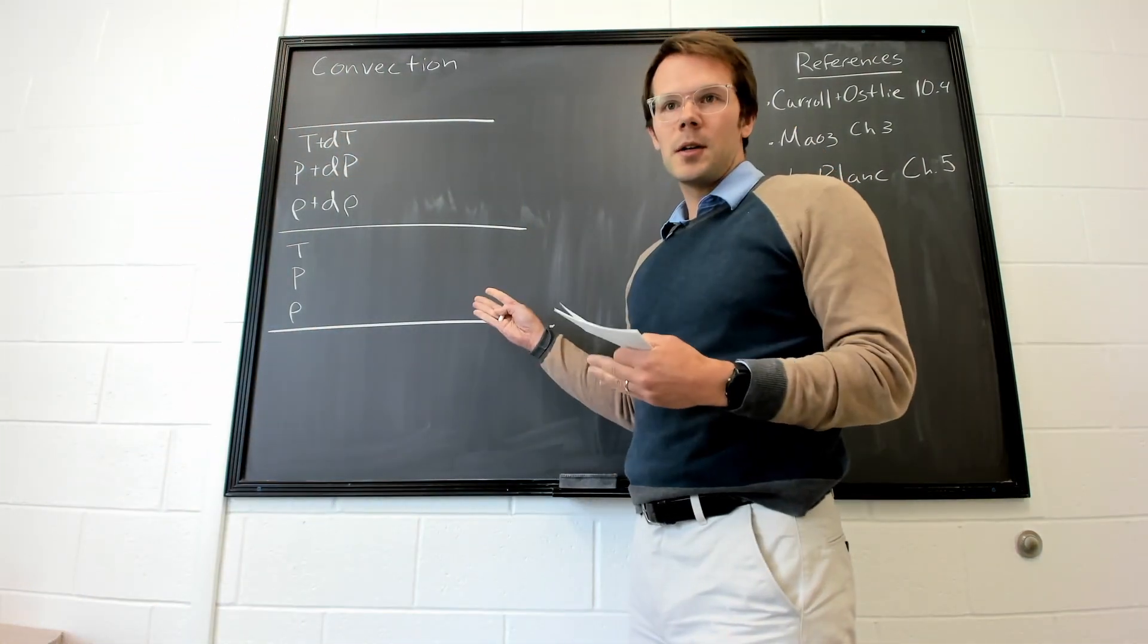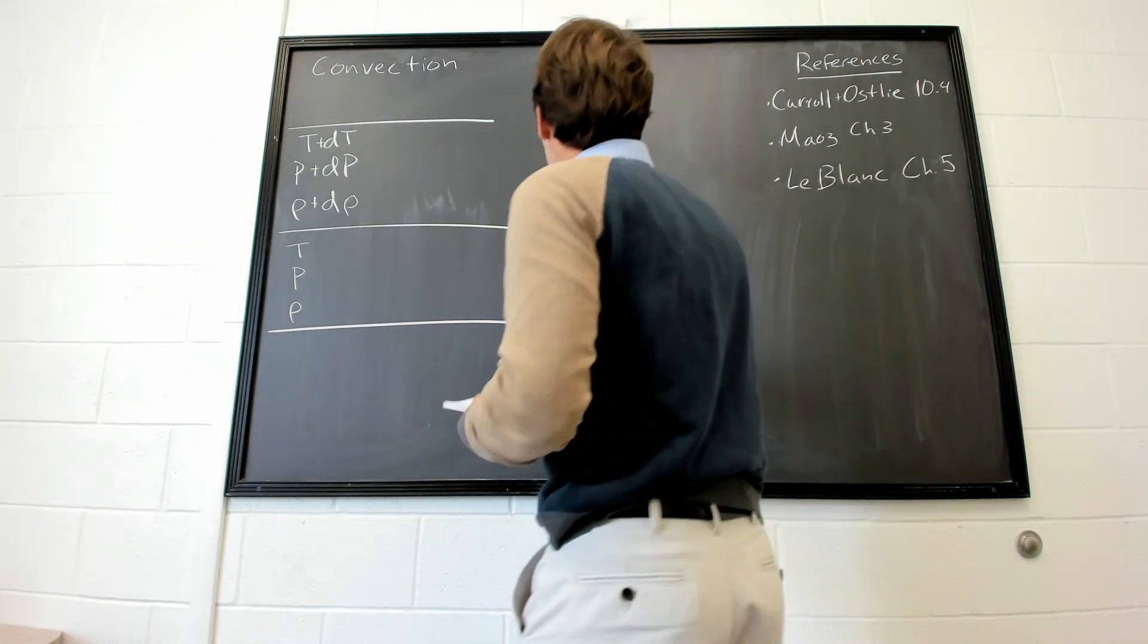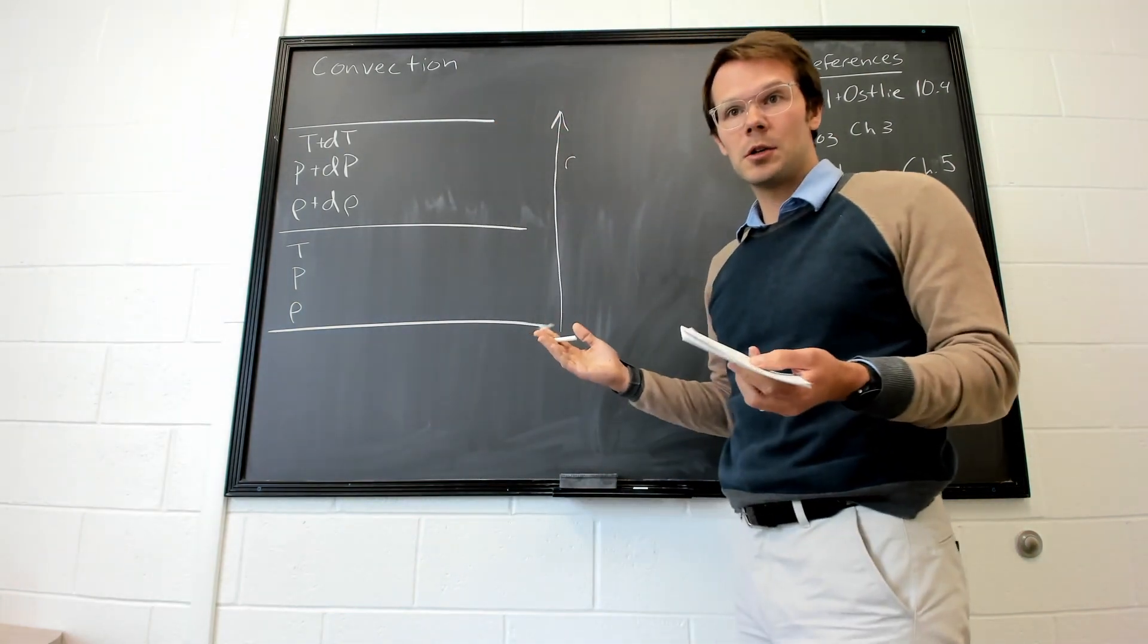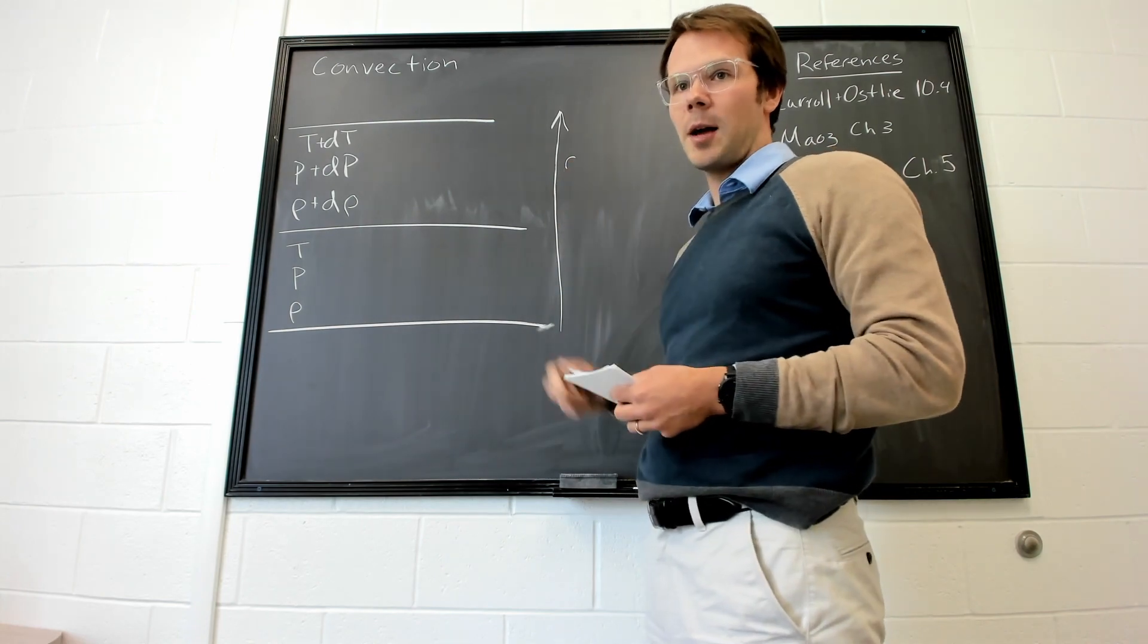So, let's talk about convection. Inside of a stellar atmosphere, we can usually parameterize stars as one-dimensional entities with radius. This would be down towards the core and this would be up towards the atmosphere.